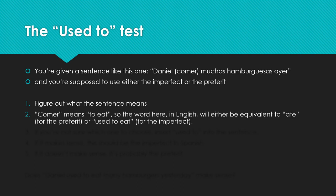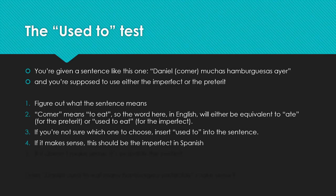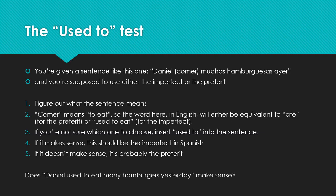If you're not sure which one to choose, insert 'used to' before the verb into the sentence. If it makes sense, it should be the imperfect in Spanish. If it doesn't make sense, it's probably the preterite. So if we put 'used to' into the sentence above, we ask: 'Does Daniel used to eat many hamburgers yesterday?' That should feel weird, because this is a completed action. It happened one time, one day — yesterday. That's how you use the 'used to' test.